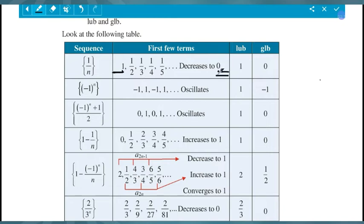The lowest lower bound is 0. For the sequence (-1)^n, the terms alternate between -1 and 1. The least upper bound is 1, and the greatest lower bound is -1. For (-1)^(n+1)/2, the terms oscillate between 0 and 1, so 1 is the least upper bound and 0 is the greatest lower bound.